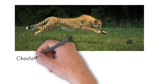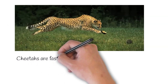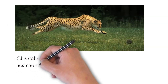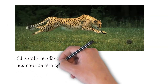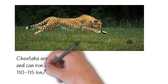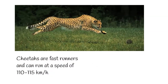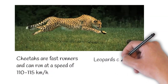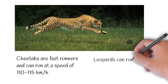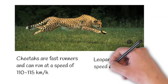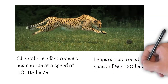When it comes to running, the cheetah is the fastest running animal on land — it can run at a speed of 110 to 115 km per hour. Leopards are slower, at 50 to 60 km per hour.